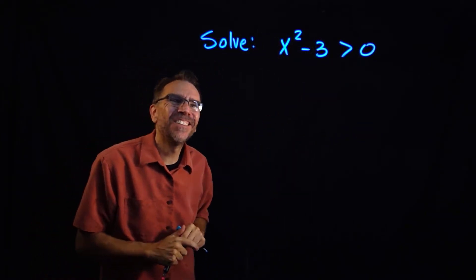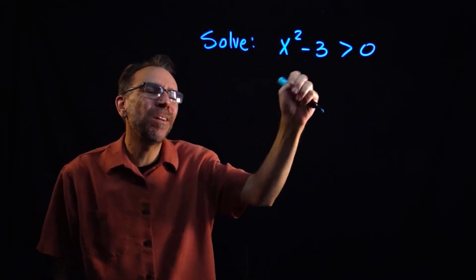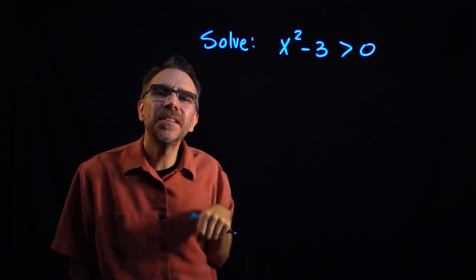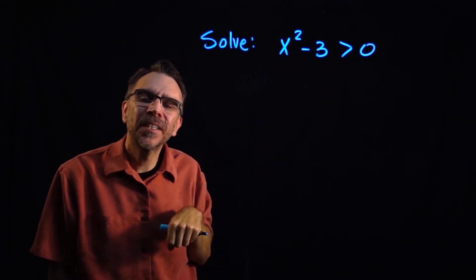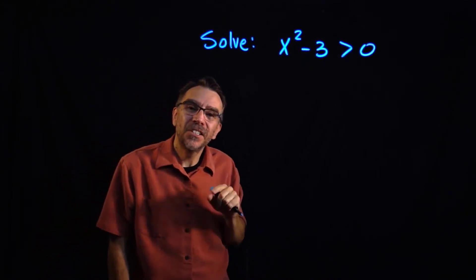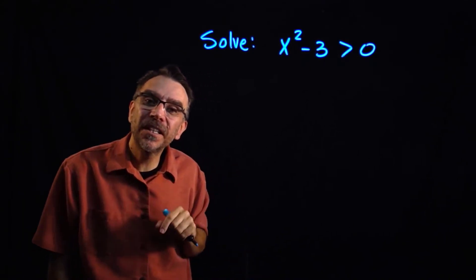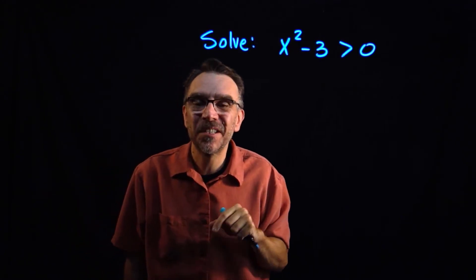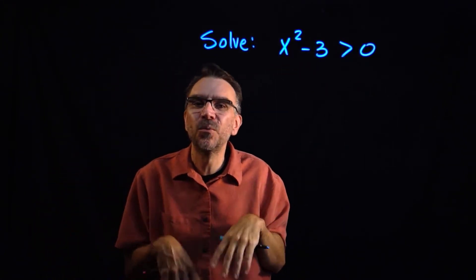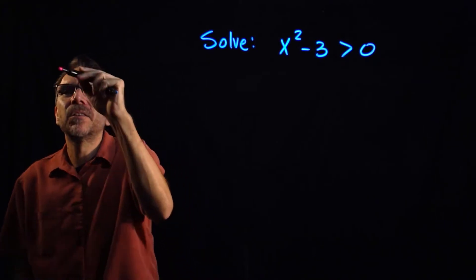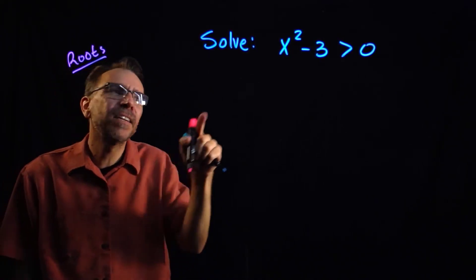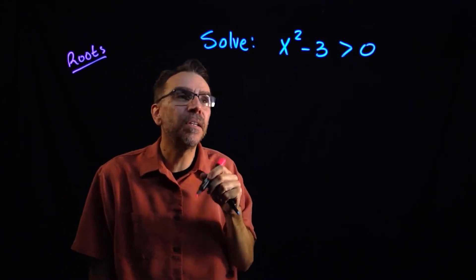We're asked to solve the quadratic inequality x squared minus 3 is greater than 0. To solve this, we're going to use a sign chart. To use a sign chart, we first need to find the critical numbers. The critical numbers for these polynomial inequalities are just the roots, and to get the roots, all you have to do is set the function equal to 0.